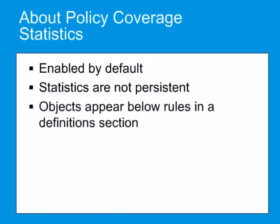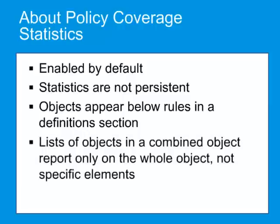Objects that are managed in policy appear below all rules in a definitions section. When a rule containing one of these policy definitions matches a user request, all references to that definition increment in every place it appears in policy. Policy objects that consist of lists in a combined source or destination object report that a match was identified, but only on the whole object. The specific element in the combined object will not be identified uniquely.